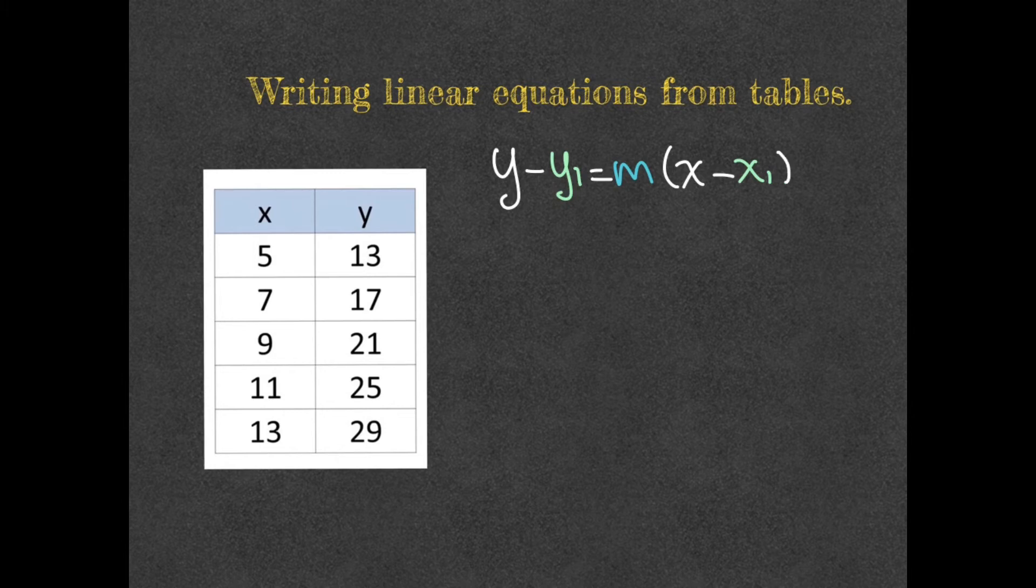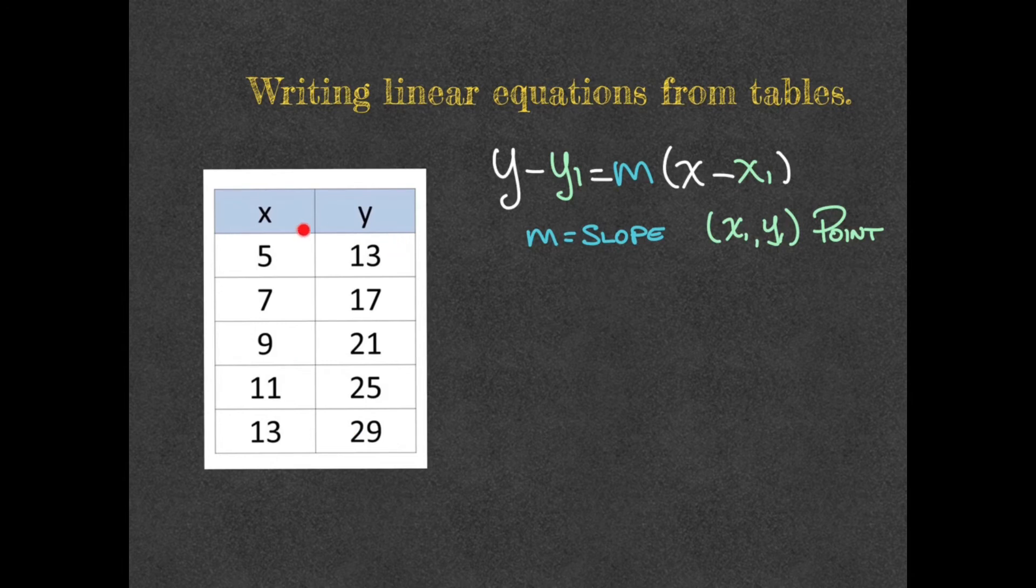Let me make sure that we understand this formula. First of all, m is still the slope. That doesn't change. And the x1 and y1 are actually an x and a y value of a point. Now in this case, we have several options. We can pick any of these points. My advice, when we get there, we're going to use the smallest one.